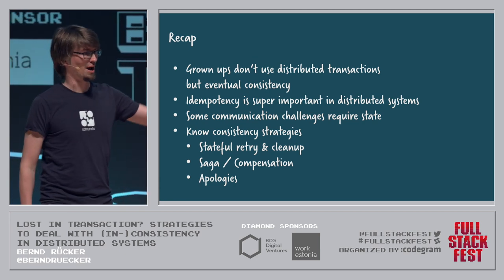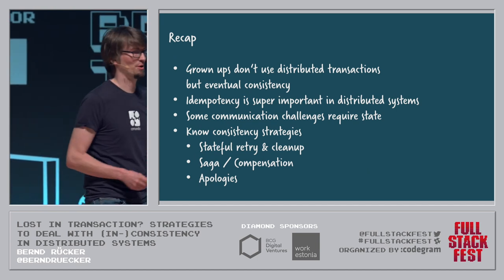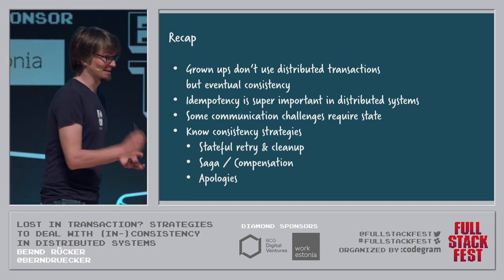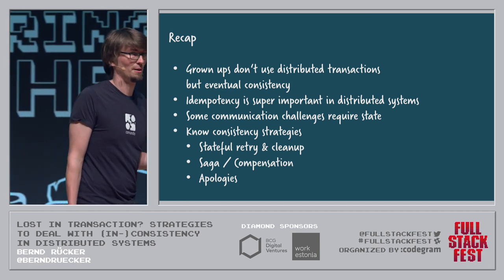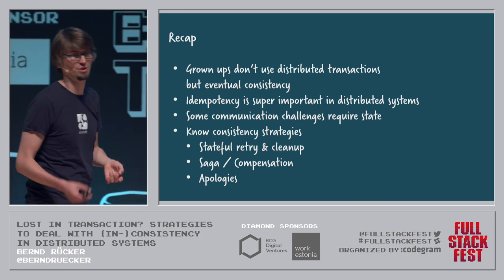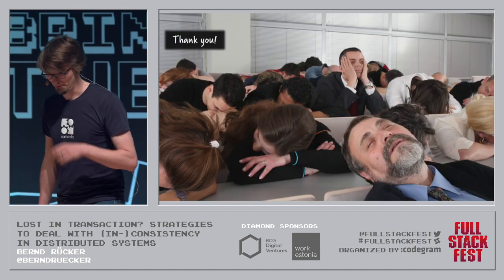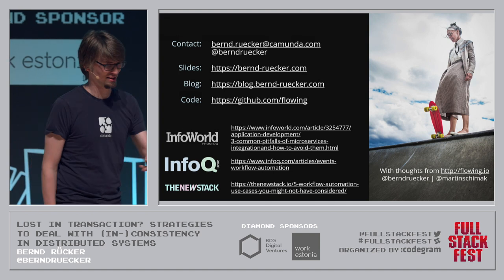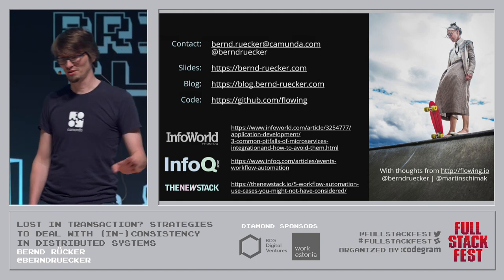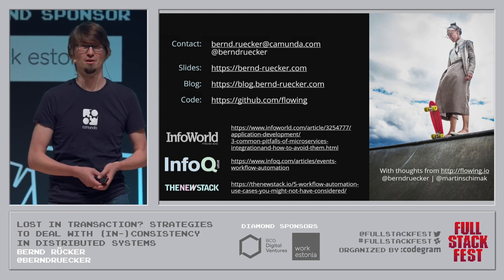Quick recap: Grown apps don't use distributed transactions — it doesn't work, it doesn't scale. You have to get used to eventual consistency; there's no way around it. Idempotency — the zucchini — is super important. Some communication challenges require state to handle. And then you have strategies: stateful retry, cleanup, sagas, compensation, and apologies. That's basically it. I have contact info on the slides. Thank you very much for listening — approach me or ask me on Twitter.